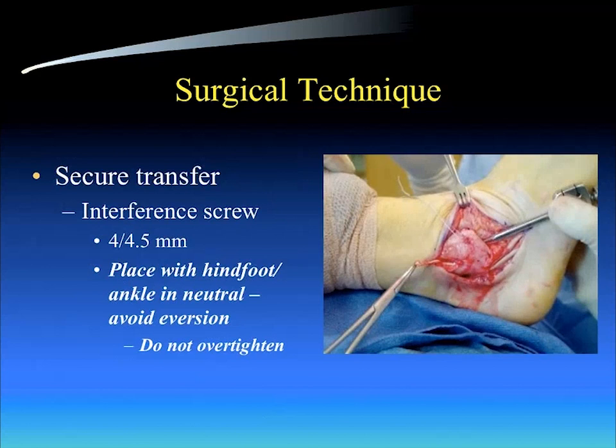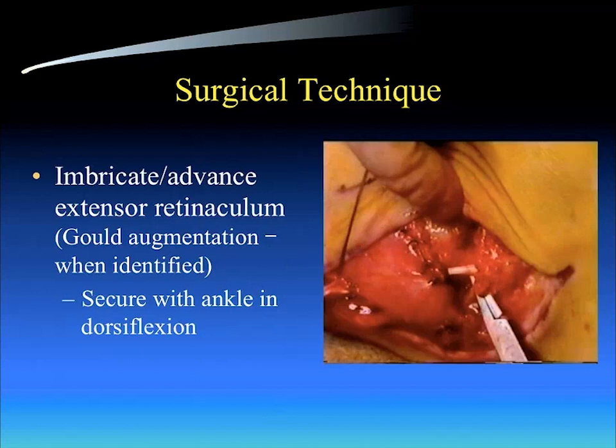We then reroute our peroneus brevis slip through the drill hole in the fibular tunnel and secure it with an interference screw, usually a 4 or 4.5 millimeter screw. It's very important that you place the hind foot and ankle in a neutral position when you do this — not maximum eversion. You don't want to over-tighten that, as that's what happened with some of the original early procedures: they over-tightened the subtalar joint, there was no inversion, and those people developed subtalar arthritis. Keep the hind foot and ankle in neutral as you place your interference screw.